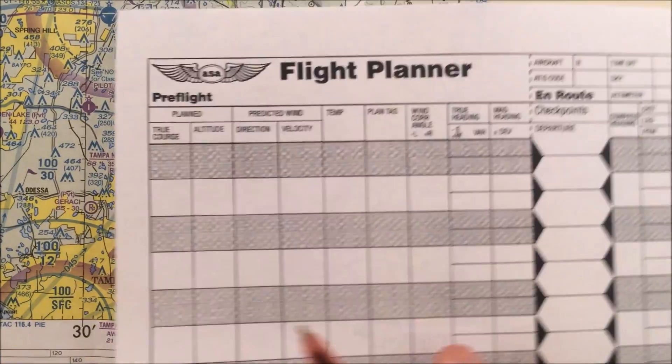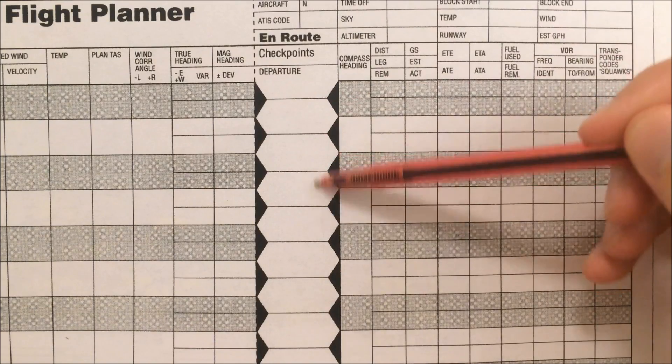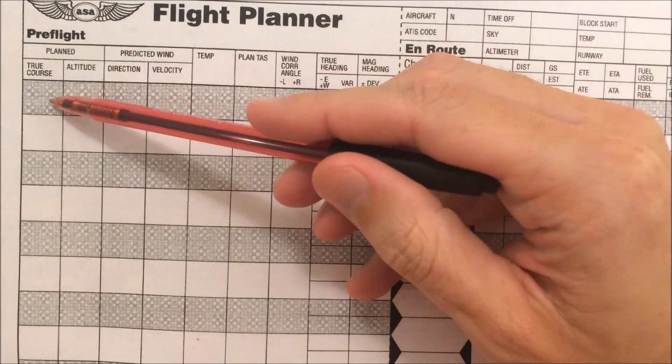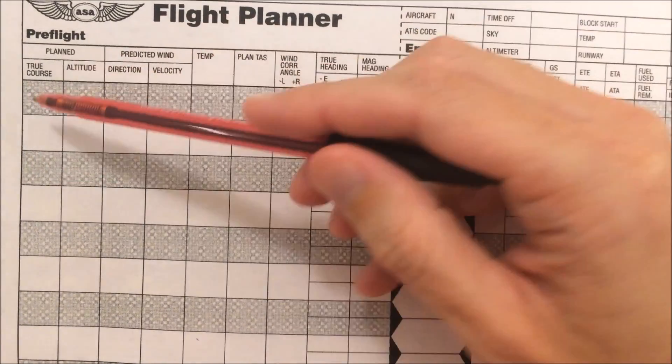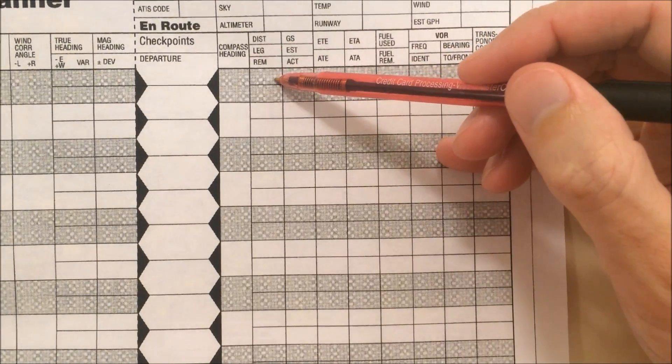So we start to use our NAV log at this point, and you fill this in in this order. You start out by filling in the appropriate checkpoints that you've selected, and then you go to fill in the true course that you measure from the sectional chart, and then you'll fill in the distance for each leg right here.